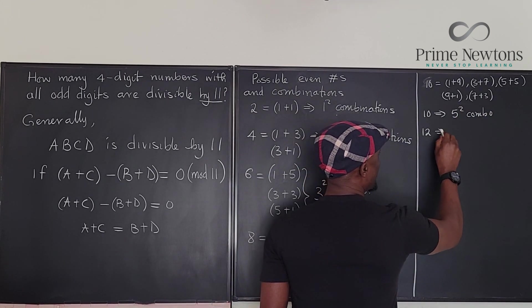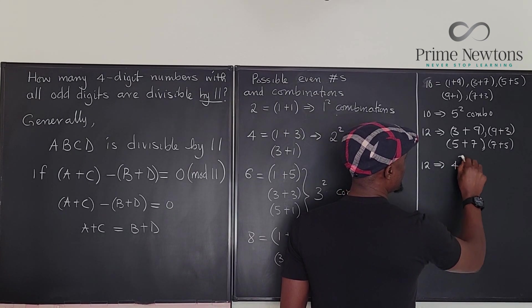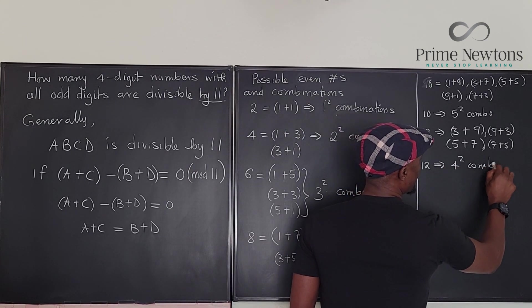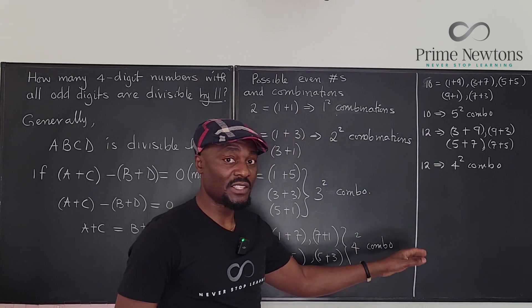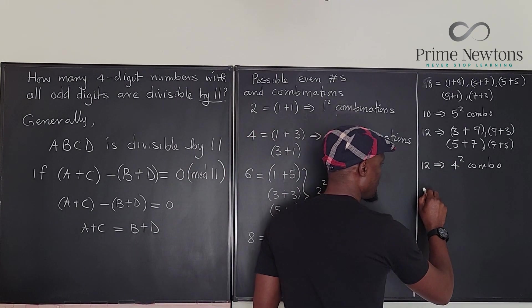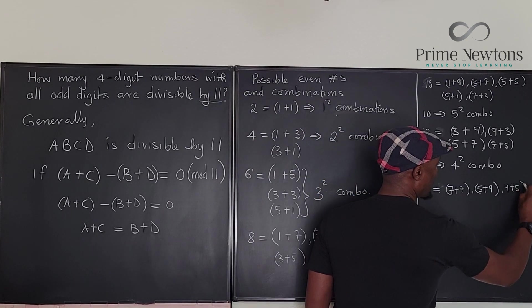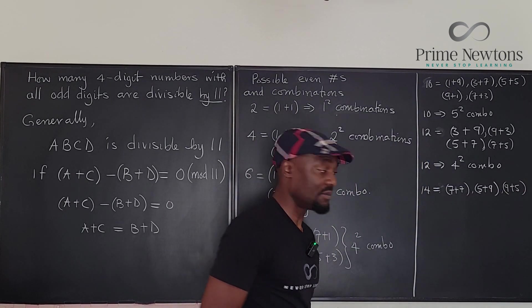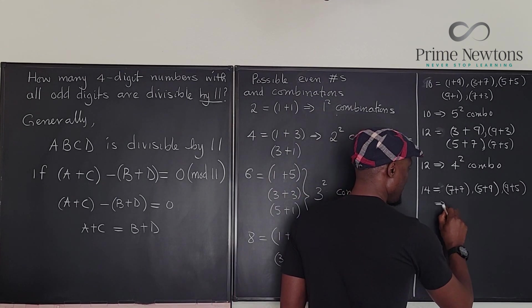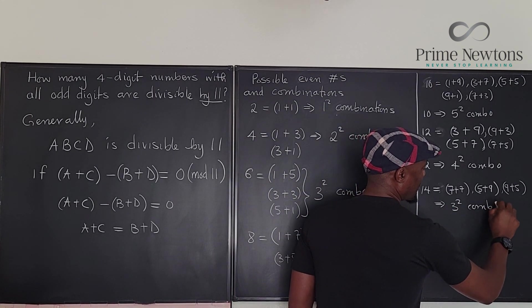Let's go to 12. How do we do 12? It implies 4 squared combinations. Now if you continue like this, you will notice that the numbers will drop. So the next thing is 14 will be 5 combinations, wait no, 3 combinations. And that's it. There's no other combination. So 14, this implies 3 squared combinations.